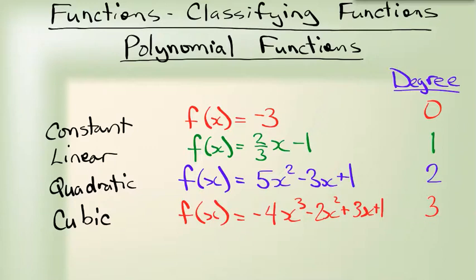So let's look at some different types. The ones we're going to concern ourselves with are constant functions, linear functions, quadratic, and cubic. A constant function has a degree of 0. A linear function has a degree of 1 because the highest power on X is 1. A quadratic function has a degree of 2, and a cubic function has a degree of 3.